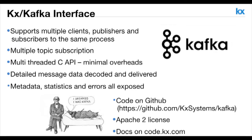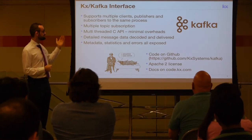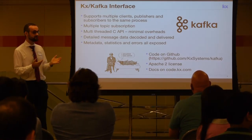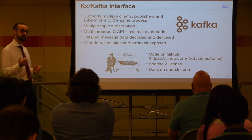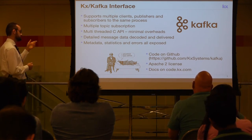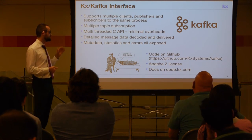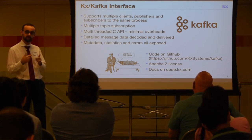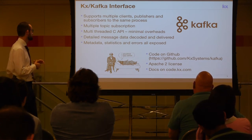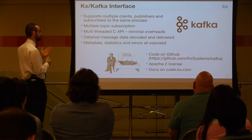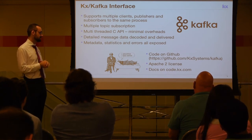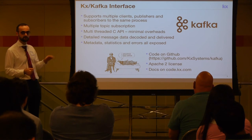The next slide covers the Kafka interface. This supports multiple clients, publishers, and subscribers all in the same process. It uses a multi-threaded C API under the hood, built from scratch, so it's bidirectional — unlike other Kafka APIs. You can get detailed messages, metadata, statistics, and errors, all exposed.